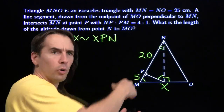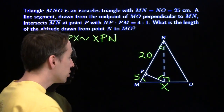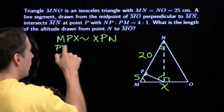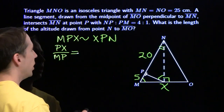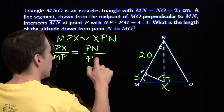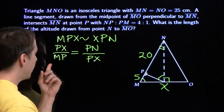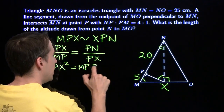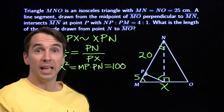We focus on side lengths we already know. Looking at ratios of legs in the two similar triangles — the ratio of long leg to short leg in the little triangle is PX over MP, and that equals PN to PX in the larger triangle. So PX squared equals MP times PN, which is 5 times 20, equals 100. Since PX squared equals 100, PX equals 10.